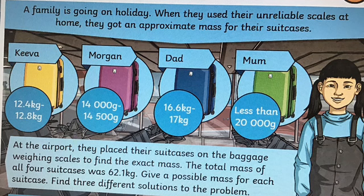Let's have a look at this problem. A family is going on holiday. When they use their unreliable scales at home, they got an approximate mass for their suitcases. We've done this in the Bradley household. There's Kiva, Morgan, Dad and Mum. At the airport, they placed their suitcases on the baggage weighing scales to find the exact mass. The total mass of all four suitcases was 62.1 kilograms. Give a possible mass for each suitcase.